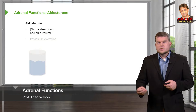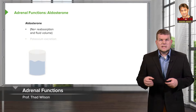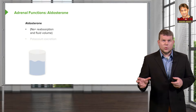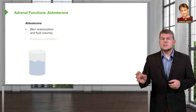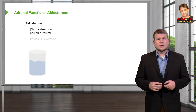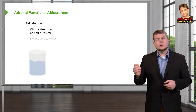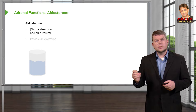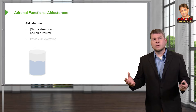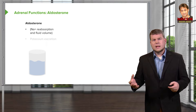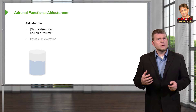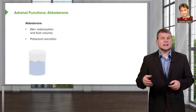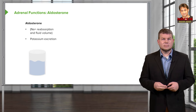Moving to the functions or the physiology of these various hormones, let's start off with aldosterone. Aldosterone is important in sodium reabsorption and fluid volume. It's also important for its ability to excrete excess potassium.